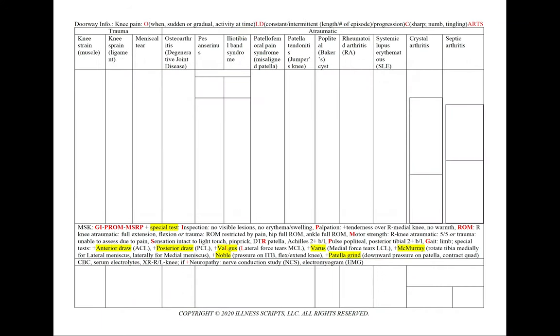For a case of knee pain, using our mnemonic OLD CARDS, we'll note the onset — when did your pain start, did it come on suddenly or was it more gradual, and do you remember what you were doing at the time.